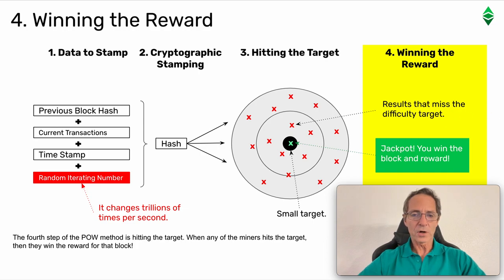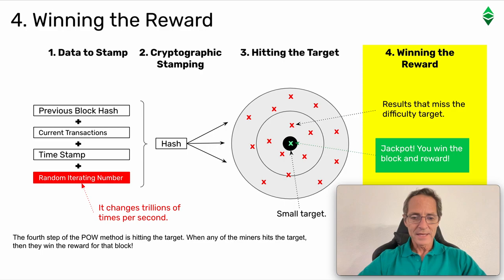Step four: winning the reward. The fourth step of the Proof-of-Work method is hitting the target. When any of the miners hits the target, then they win the reward for that block.